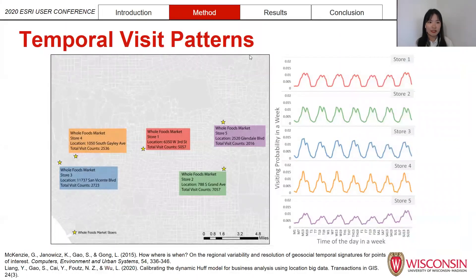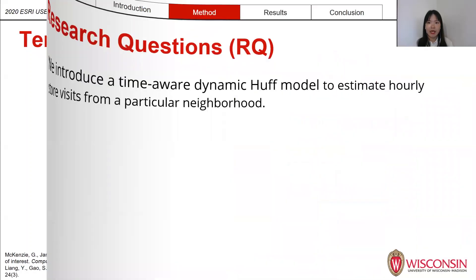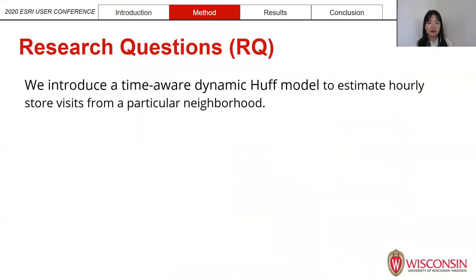One limitation of the traditional Huff model is that it only gives one value to represent the visiting probability from the customer to the store. But we know that in reality there are temporal variations in terms of visiting probability. The map shows the location of the five Whole Foods markets in Los Angeles, while the plot shows the visiting probability in each hour during a one-week period. We can see that even for the same brand, people show different temporal visiting patterns in different stores. With that in consideration, we propose a time-aware dynamic Huff model to estimate the hourly visiting probability.